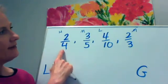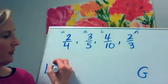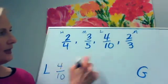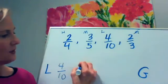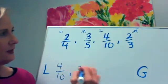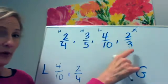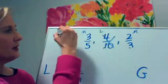I've got half and less than half, so I know my least amount is going to be four tenths. My next amount will be two fourths, and these two are both more than a half, so it's pretty much a battle between three fifths and two thirds.